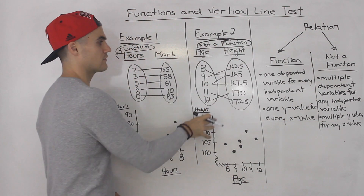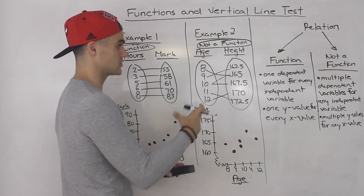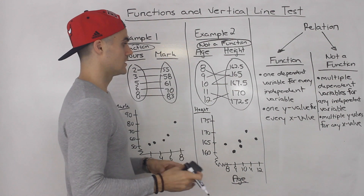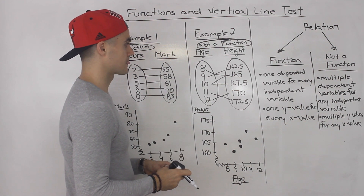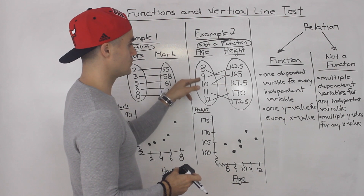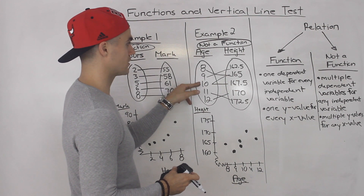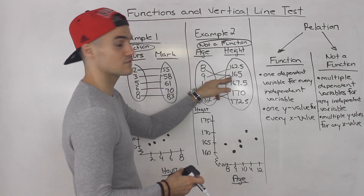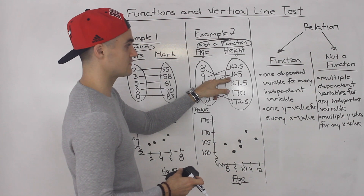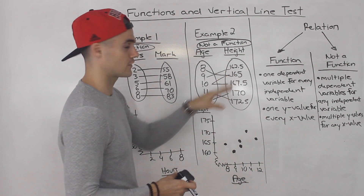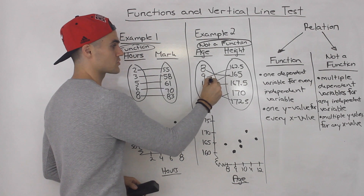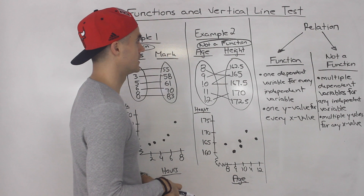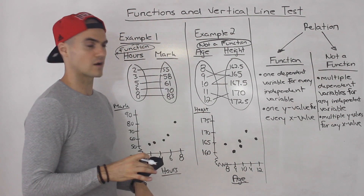Because again, for a relation to be a function, every independent variable can only correspond to one dependent variable. Now, you can have two independent variables correspond to the same dependent variable. Notice that eight and ten both correspond to 165 — the eight and the ten both map to 165. You can have that in a function, but you cannot have one independent variable corresponding to two dependent variables. Hopefully you see the difference. So example two is not a function.